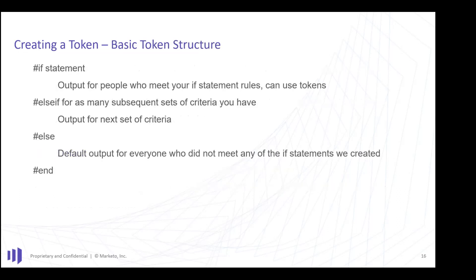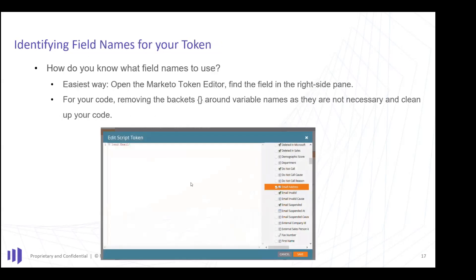Here's the structure: your first if statement at the top, then what to show for people who meet the criteria. Then else-if for as many additional sets of criteria as you need for your personalization. Rinse and repeat the else-ifs as long as needed. Then your else default for everyone who didn't meet the criteria, and close out with end. That's the basic structure of how these things work.